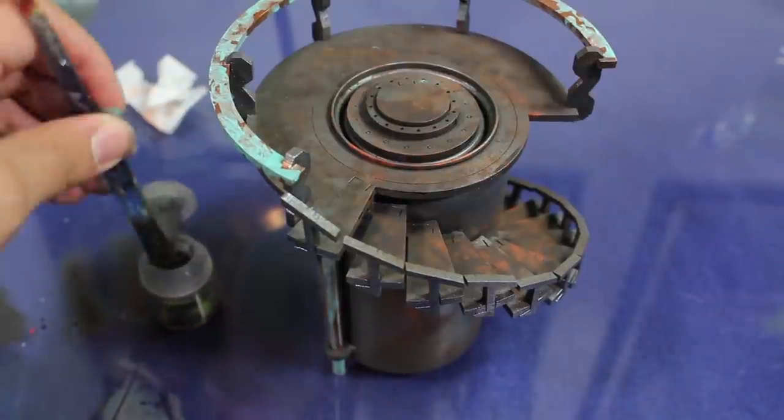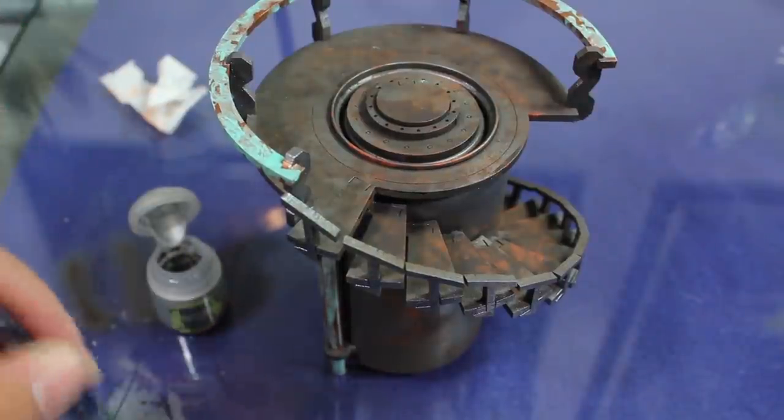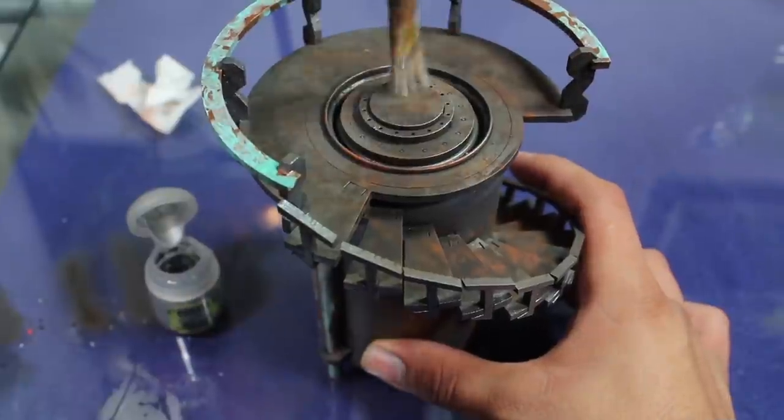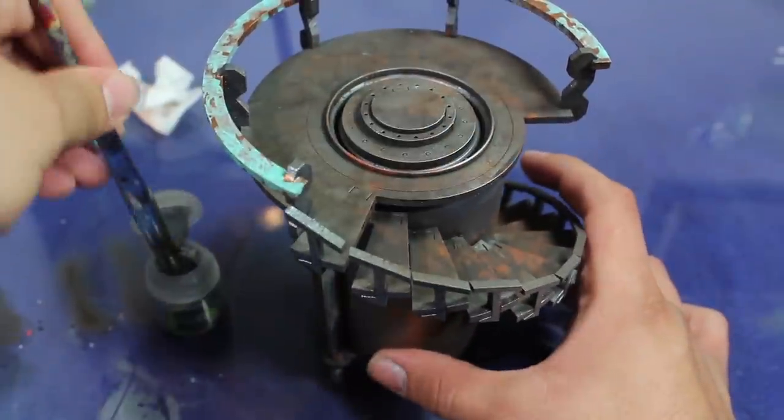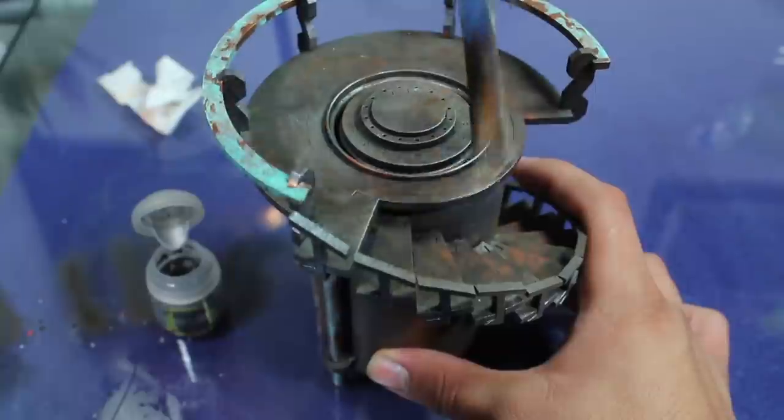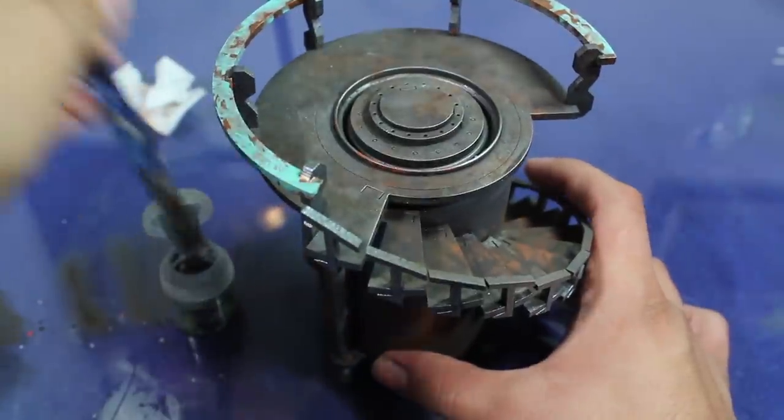Once that was done, I dry brushed the entire model with some Games Workshop Necron Compound. This is what's going to make it look like metal and help give more definition to all the features of the model.